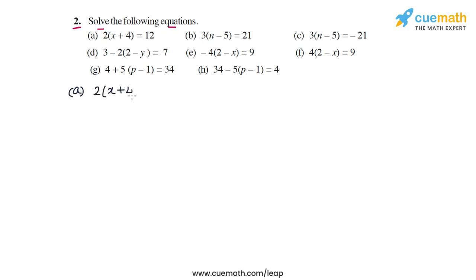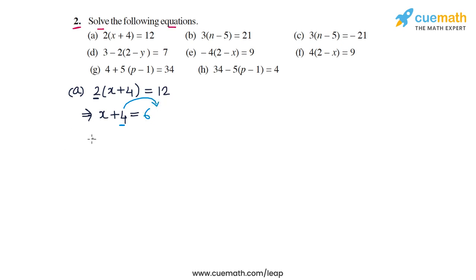The first equation is 2 times (x + 4) is equal to 12. The first step is to divide both sides by 2, which gives us x + 4 on the LHS and 12 by 2, which is 6, on the RHS. Next, we subtract 4 from both sides, or transpose 4 to the right side to get minus 4, giving us x = 6 minus 4, so x is equal to 2.